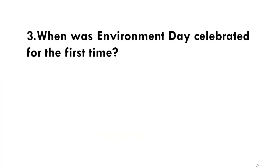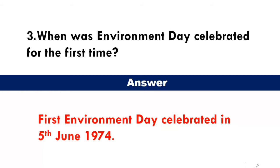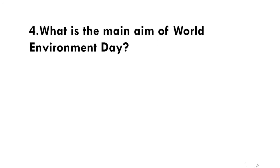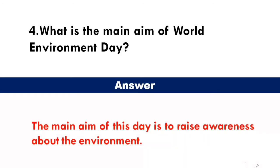When was Environment Day celebrated for the first time? Answer: the first Environment Day was celebrated on 5th June 1974. What is the main aim of World Environment Day? Answer: the aim of World Environment Day is to raise awareness about the environment.